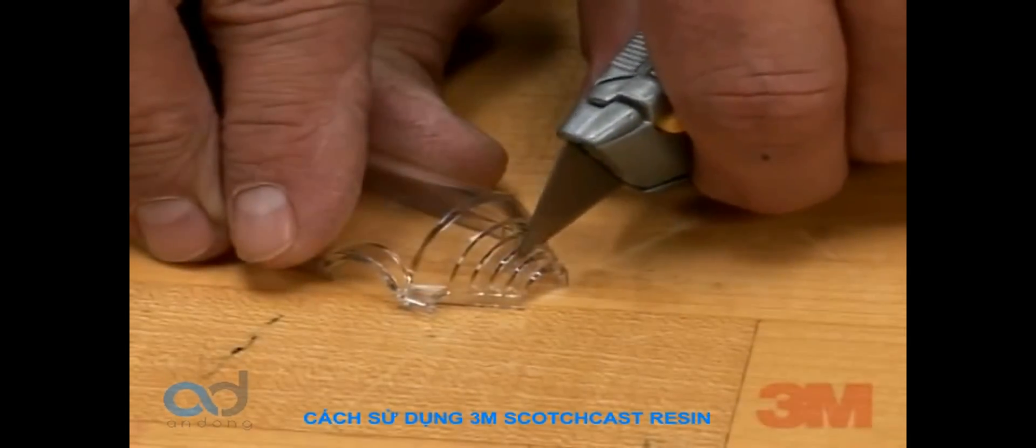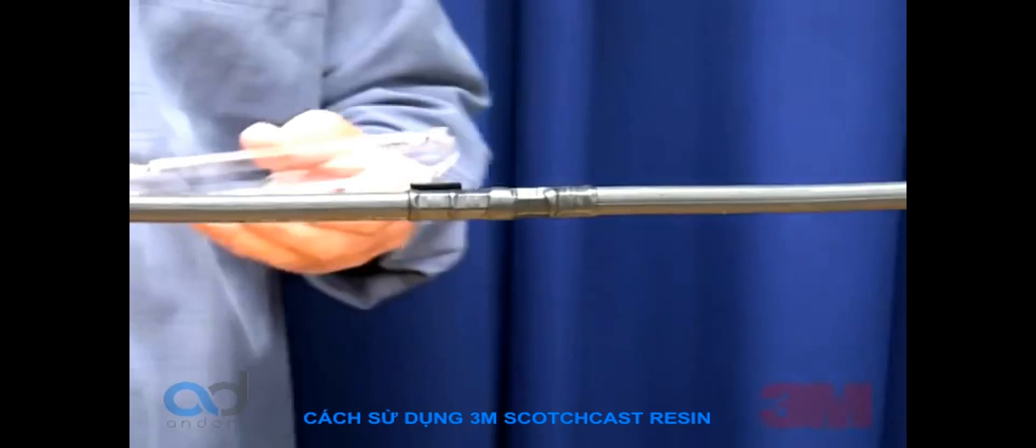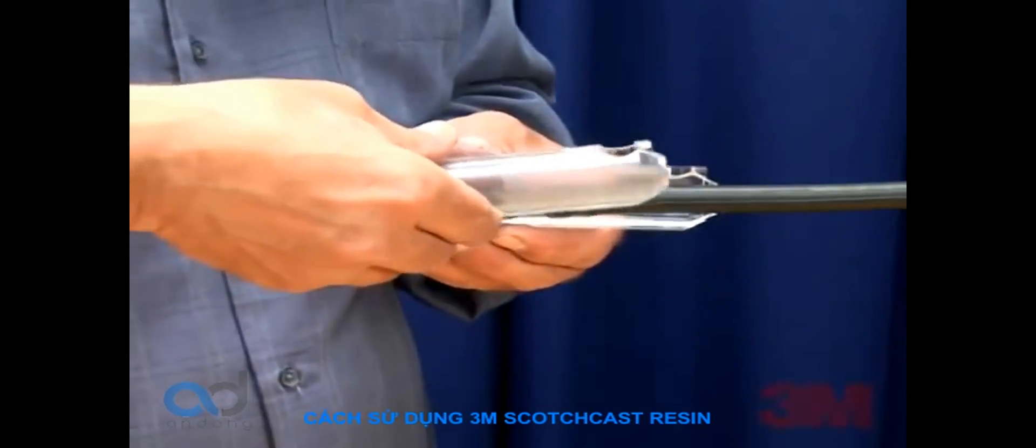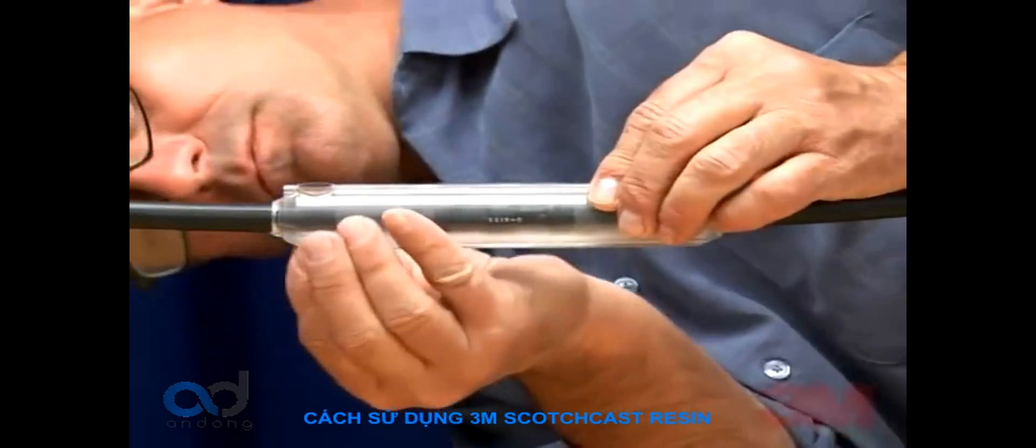Step 3: Trim the mold body ends with a blade to fit cables slightly loose. Hold the mold halves in place centered over the splice. Snap the mold halves together firmly. Check to see that both seams are carefully snapped together.